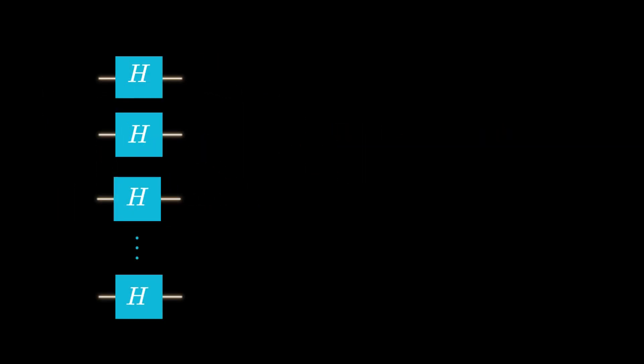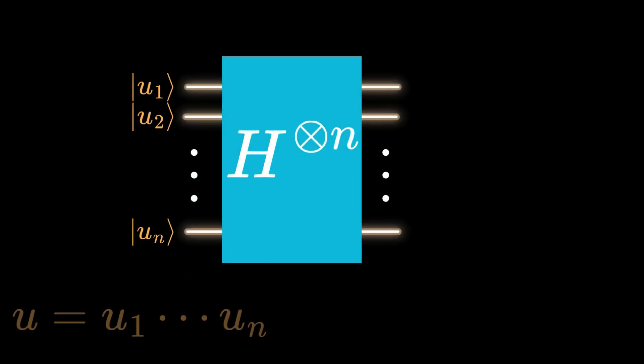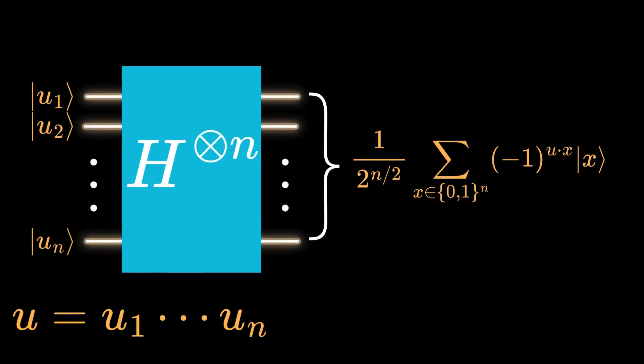Now consider n parallel Hadamard gates. However, the phase of each term is either plus 1 or minus 1, depending on the inner product of the input vector with the corresponding binary representation.